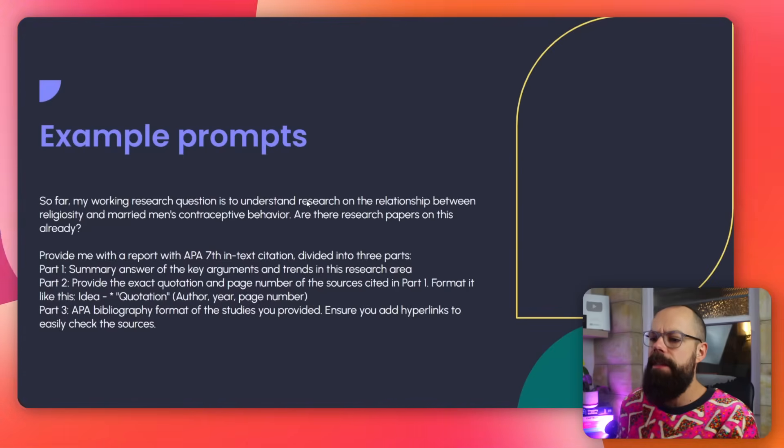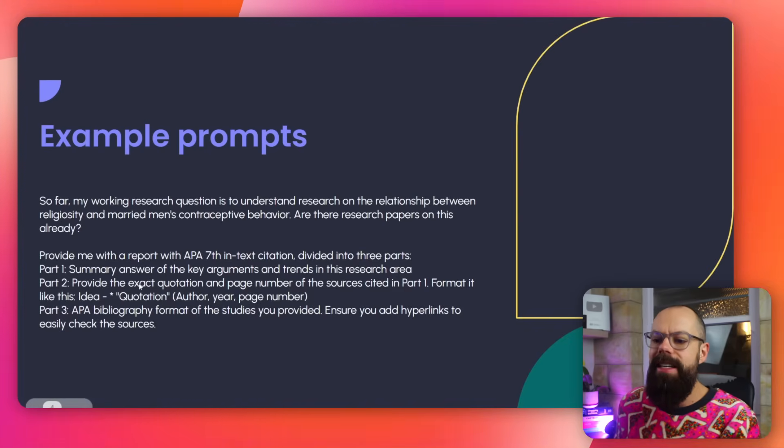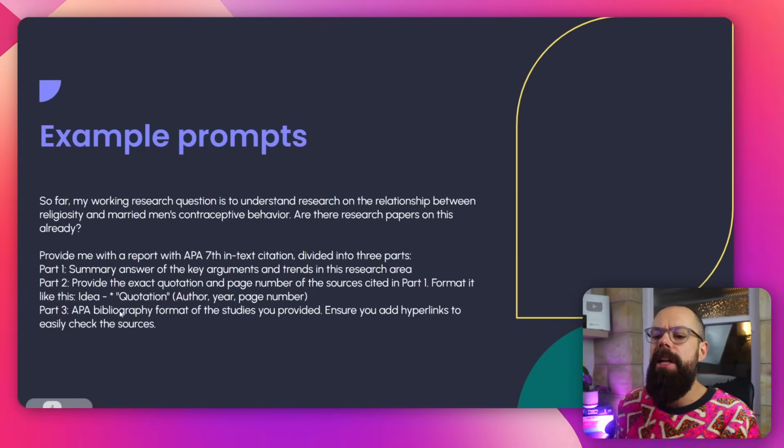Here is an example prompt — the sort of thing I wanted to know from these large language models. My research team wanted to know three things. We asked the model to provide: first, a summary answer; then the exact quotation where it found that information; and also an APA bibliography of the studies provided. This really stress tests all of the latest ChatGPT models to see if they can provide real references cited for the appropriate reason.